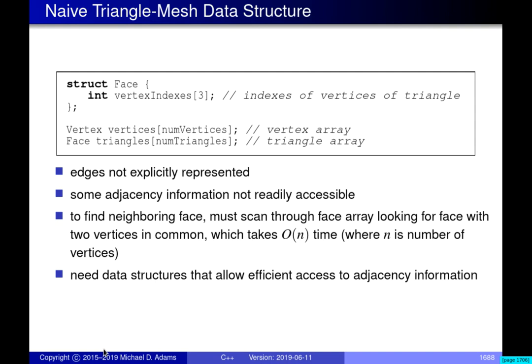The most straightforward way to represent a triangle mesh is using a data structure with an array of vertices — each entry having x and y coordinates — and an array of faces, where each entry stores the indices of the three vertices making up that triangle. For example, if a triangle's vertices are vertex 5, 6, and 7, the array stores 5, 6, 7. This is the most intuitive approach.